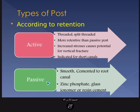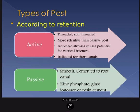According to retention, posts may be active or passive. Active posts may be threaded or split — they are more retentive than passive posts but increased stresses cause potential for vertical fracture. Active posts are indicated for short canals. Passive posts may be smooth and must be cemented using zinc phosphate or glass ionomer cement. Active posts are threaded into the canal without cement but carry a risk of vertical fracture.